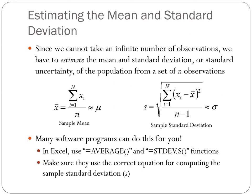Since we can't take an infinite number of observations, we can't get the true probability density function for a population. Therefore, we have to estimate the mean and the standard deviation based on a limited number of observations. We can estimate the mean of a probability density function based on n measurements by taking the mean of those measurements that we have recorded.